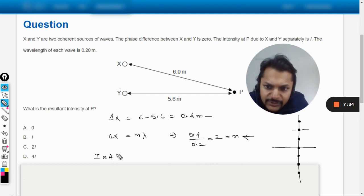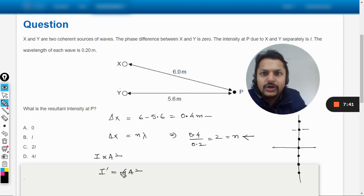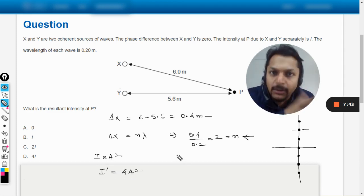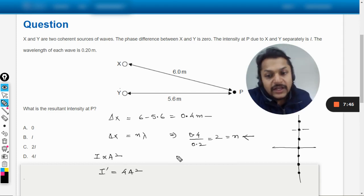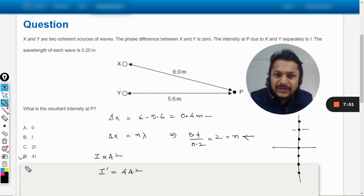Now we know that intensity is directly proportional to amplitude squared. So intensity dash will be 4 times a squared because now the amplitude will be double. If amplitude is doubled, intensity becomes 4 times. So the answer will be D.